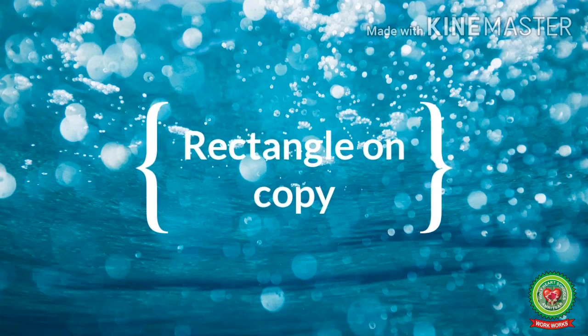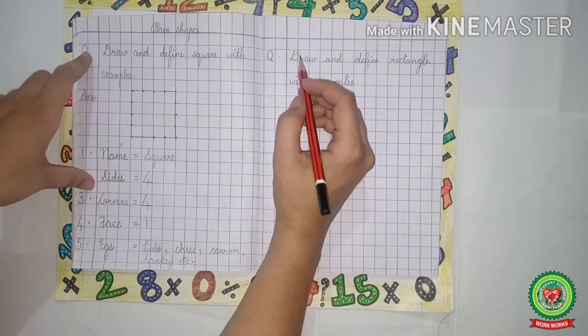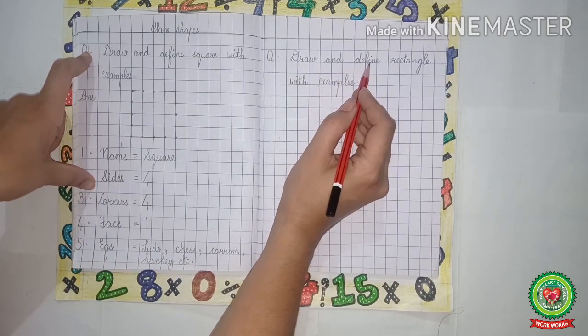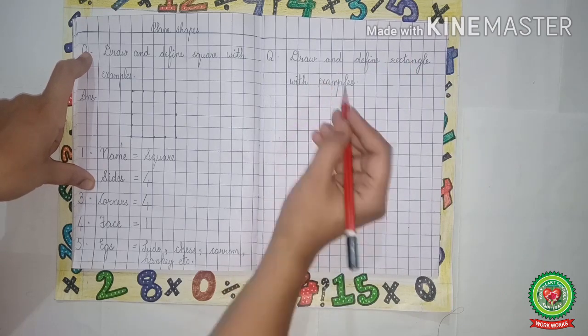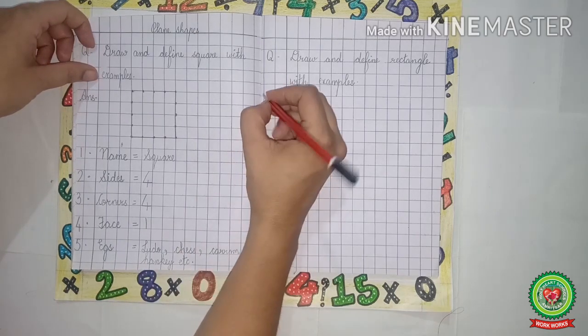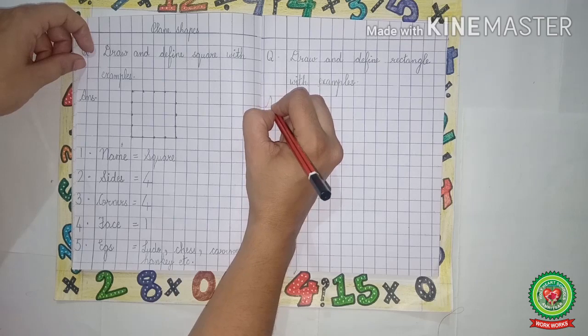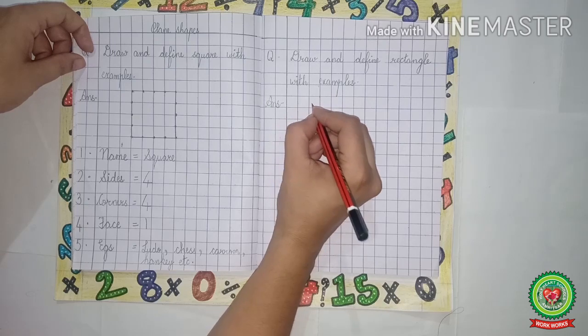Now let's learn how to do rectangle on copy. The question is: draw and define rectangle with examples. Now today we will learn how to draw a rectangle on copy. So first, after leaving one line, we will write ans, answer. Now leave three boxes.